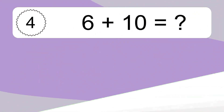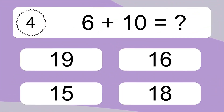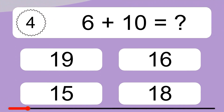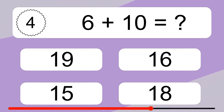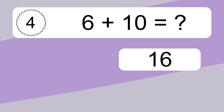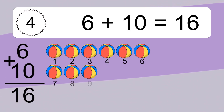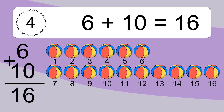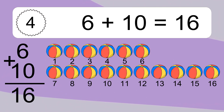6 plus 10 equals what? 6 plus 10 equals 16. Let's count it. 1, 2, 3, 4, 5, 6, 7, 8, 9, 10, 11, 12, 13, 14, 15, 16.